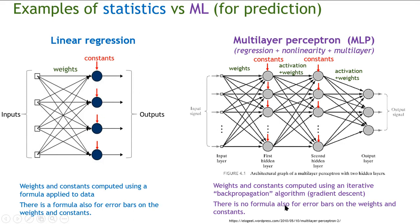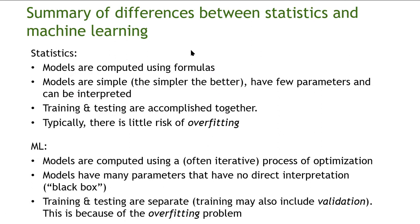The weights in the multilayer perceptron have no names and no direct interpretation, unlike linear regression where weights are called regression coefficients and tell you how much each variable affects the output. In regression you can also put error bars on each coefficient — for example, this weight is 3.5 plus or minus 0.7. In the multilayer perceptron there are too many weights and there are no error bars on them.